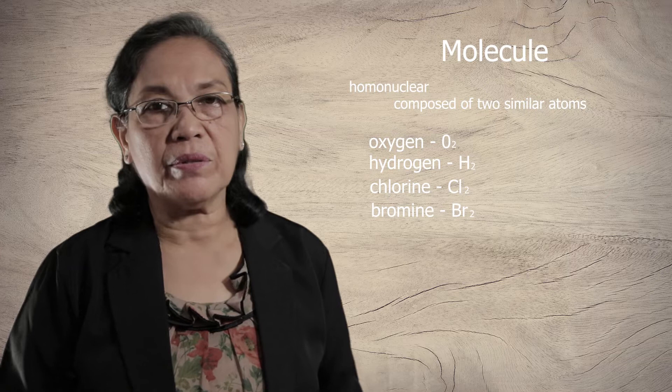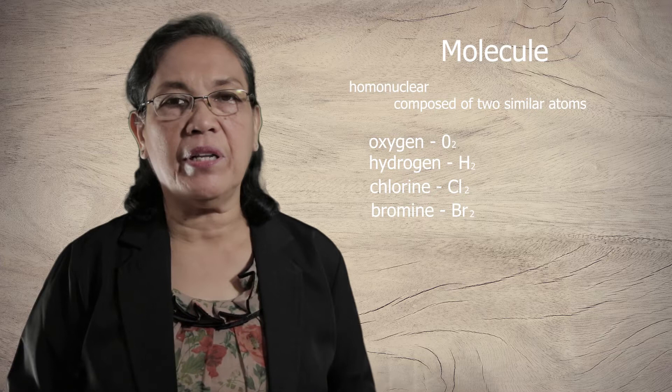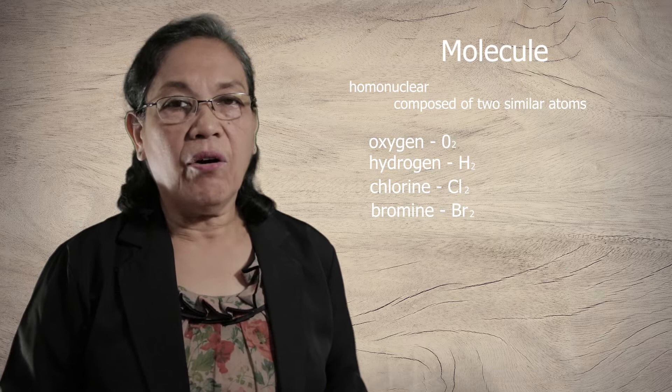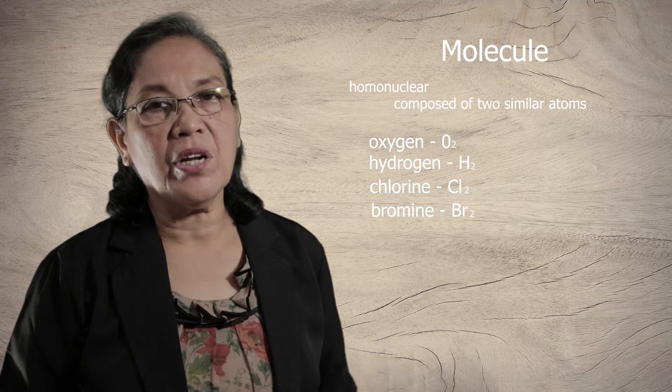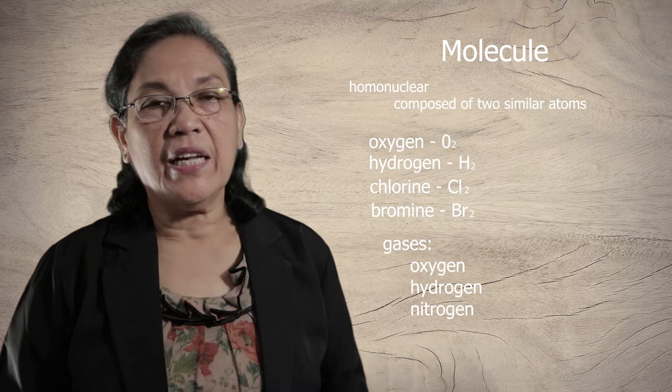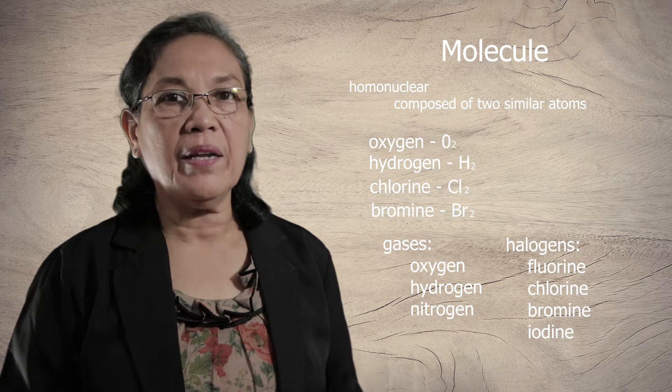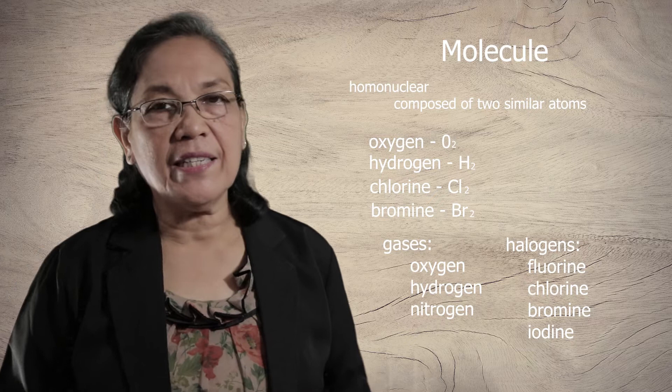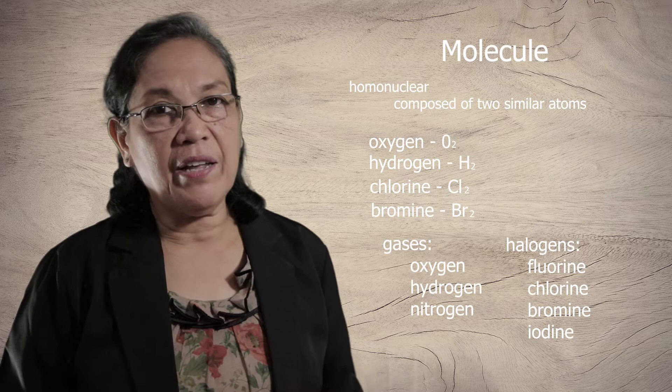Actually, all gases found in the periodic table are diatomic in nature, and all the halogens are also diatomic in nature. The gases that are diatomic are oxygen, hydrogen, and nitrogen. The halogens are fluorine, chlorine, bromine, and iodine. The noble gases are not diatomic because they are already very stable.